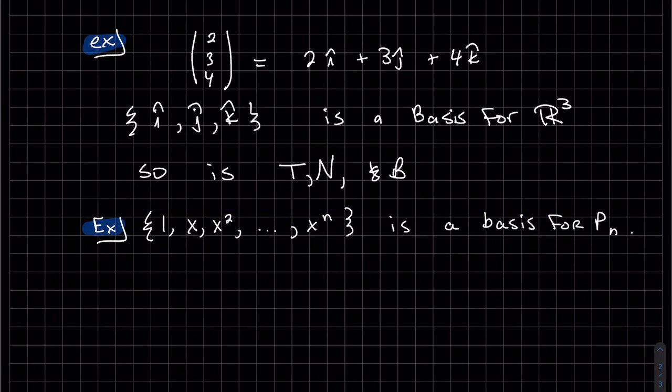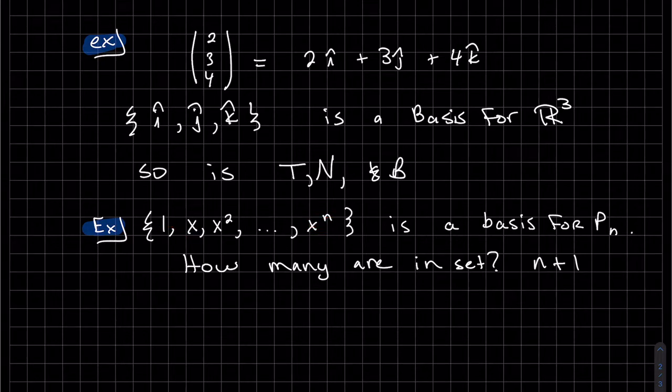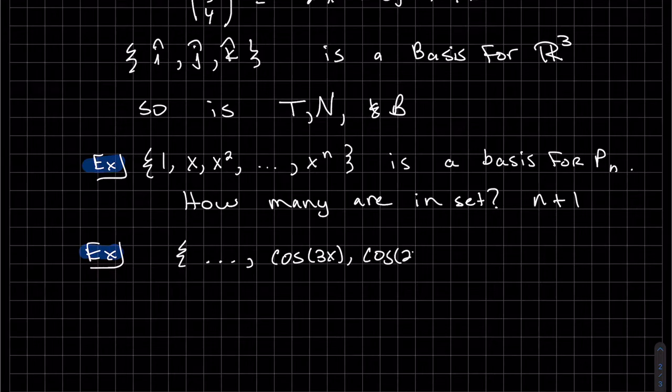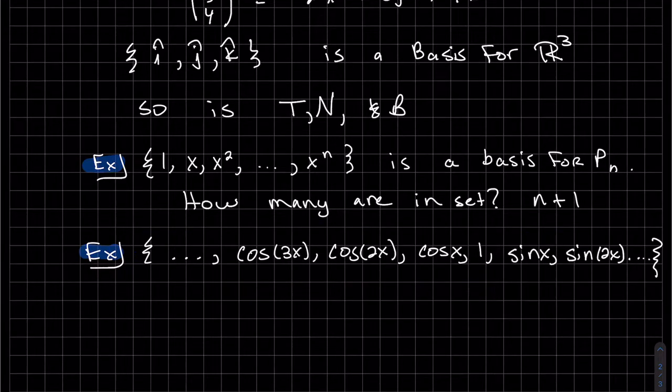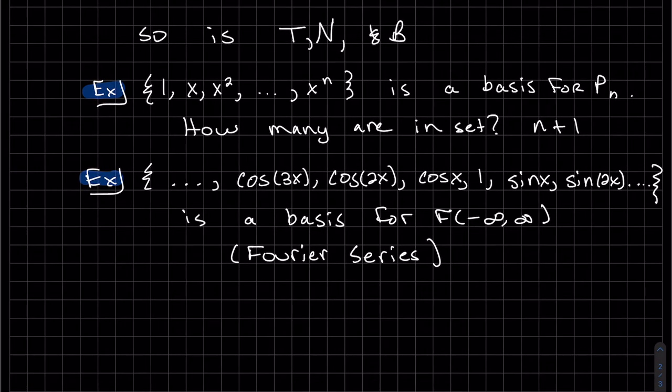So we also have 1, X, X squared, all the way to X to the N is a basis for P_N. How many are in that set? Well, we have N, but we have the 1, so the answer is N plus 1. We have this infinite set, and this is a basis for the Fourier series, which we will cover later in this course.